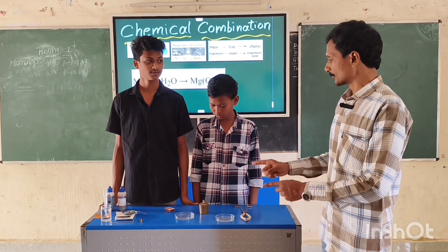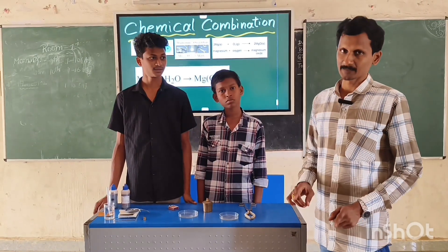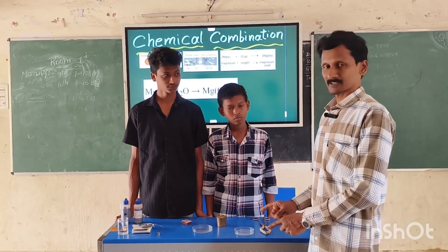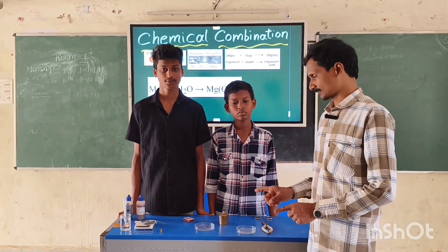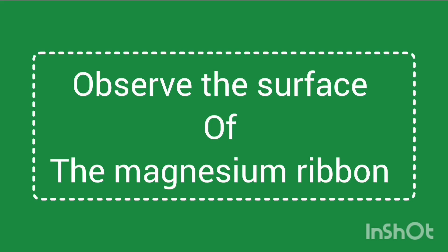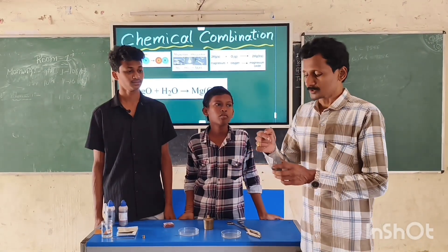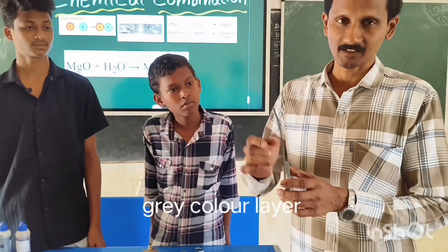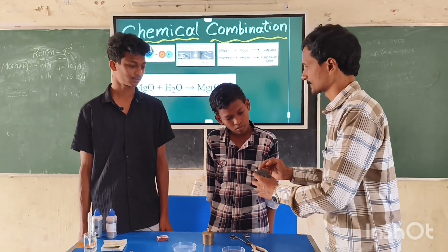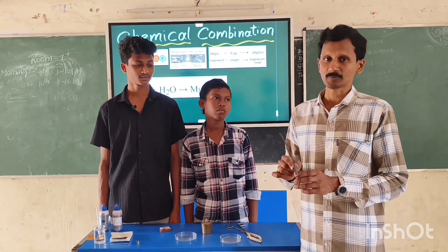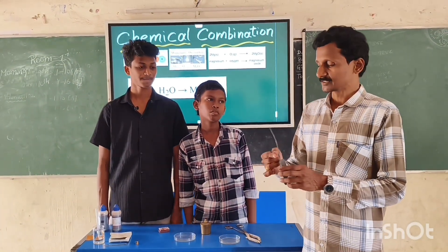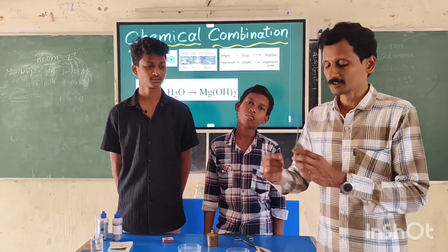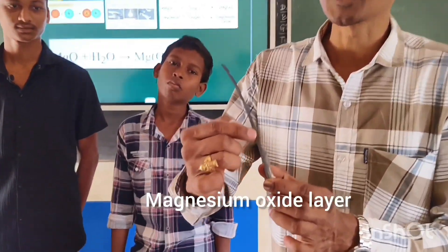Students do the experiment of the burning of magnesium ribbon and observe. First, observe the surface of the magnesium ribbon — it already has a layer of magnesium oxide on it. Magnesium is a reactive metal, so it forms magnesium oxide with moisture and oxygen in the air. This is the magnesium oxide layer.